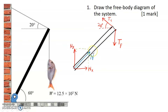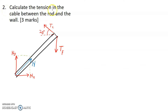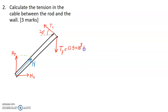This is the correct free body diagram of our system. Question number 2: calculate the tension in the cable between the rod and the wall, meaning that we need to calculate the value of TC. From the original diagram, we know that TF is equivalent to the weight of the fish, which is 12.5 times 10 to the power of 3 newton. For any object to be in static equilibrium, it will have to follow two rules. The first one is total force is equal to 0 for both X and Y components.